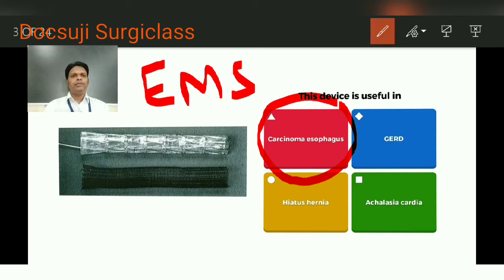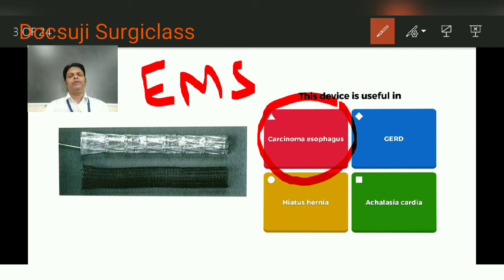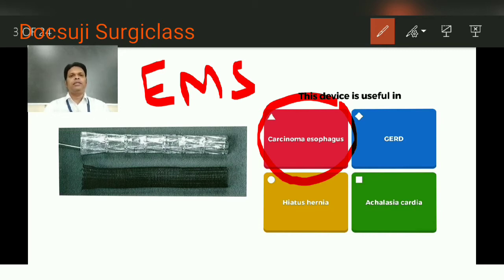This stent can be introduced into the esophagus either by radiological method — that is fluoroscopy — or by endoscope. By inserting this stent into the esophagus over the growth, it will spread across, retain there, and relieve the dysphagia so the patient can take food properly. The advantage is there is no need for dilatation beyond 8 millimeters. While introducing, the stent is in the collapsed state; after introducing, it will fully expand. This is the expanding metallic stent, and other conditions are ruled out.